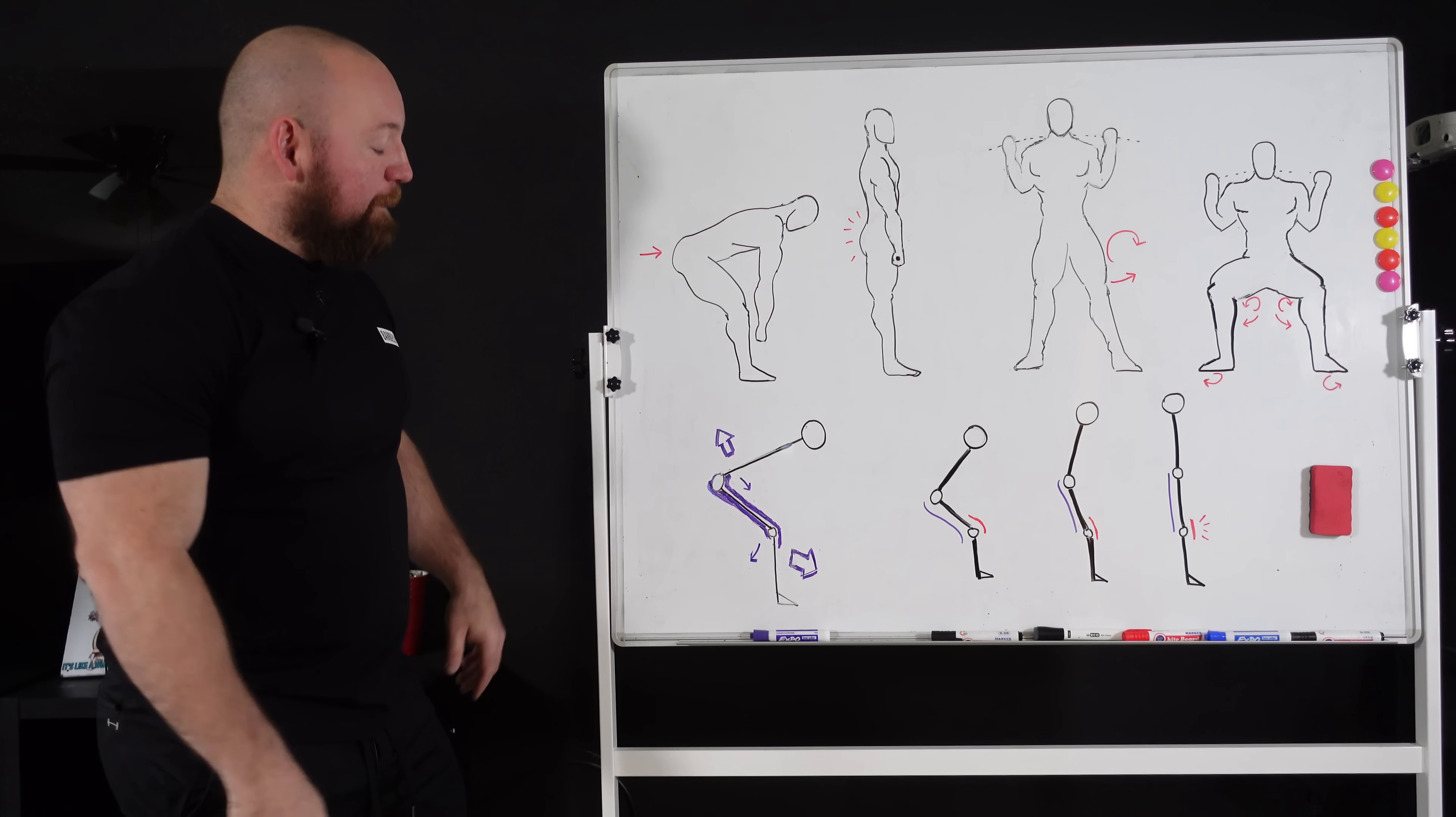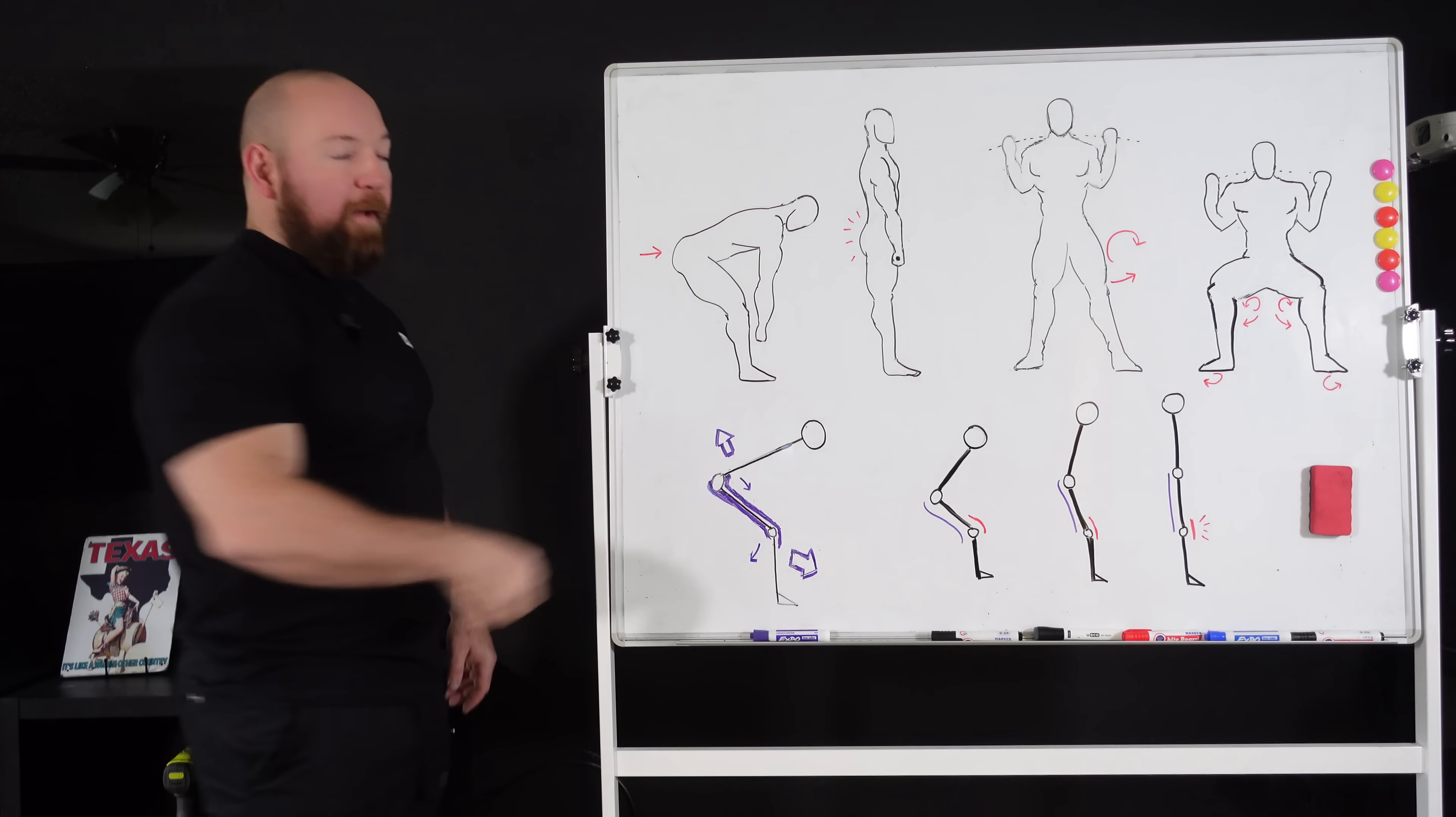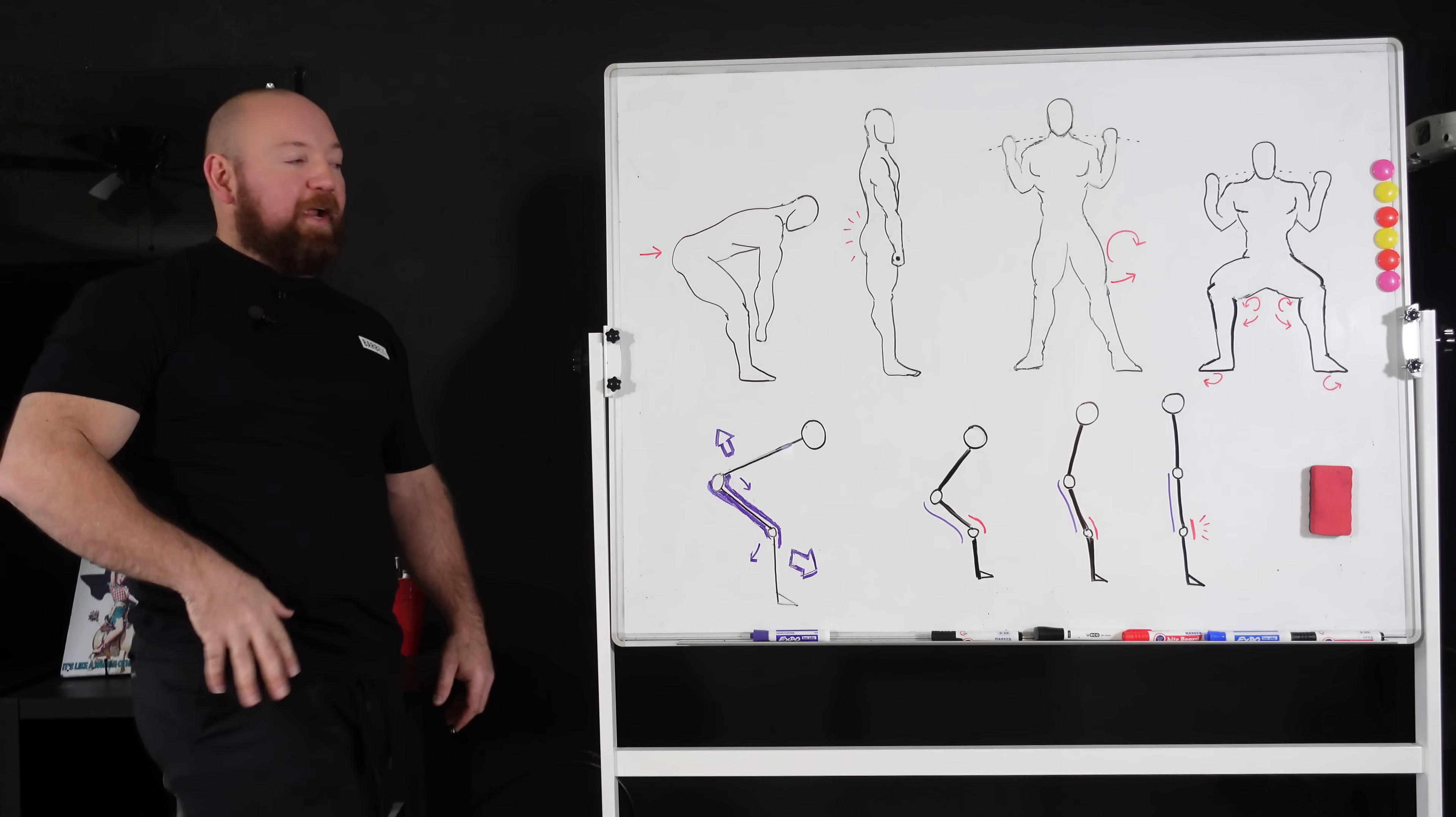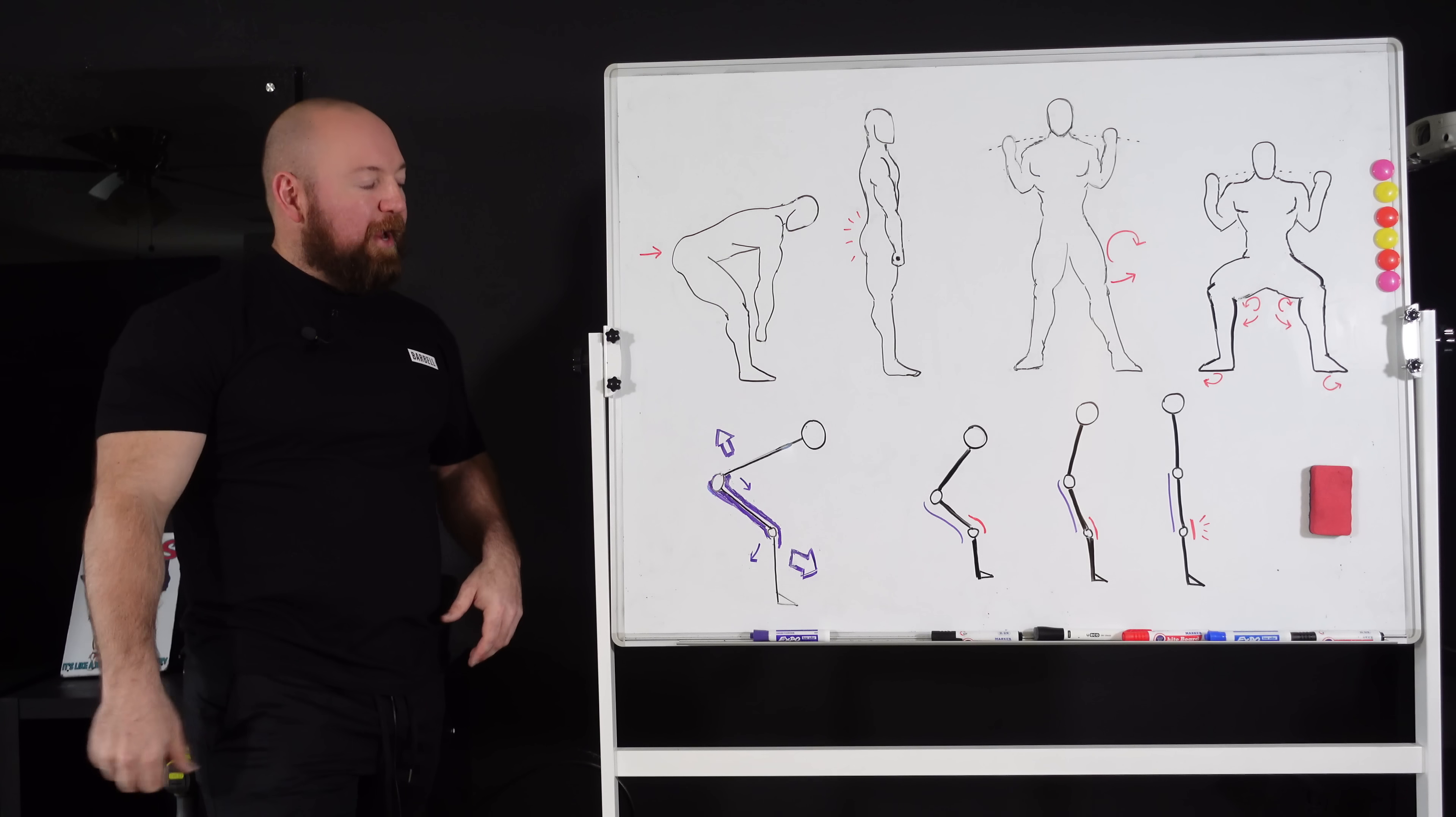So the rectus femoris actually operates the same way. Most of the quadriceps muscles just go over the knee, but the rectus femoris goes all the way up, crosses over the hip. So that's used in hip flexion. So if you're lifting your leg up, if you've ever tried to do an L-sit, you know, your legs, your quads start to shake. That's why.